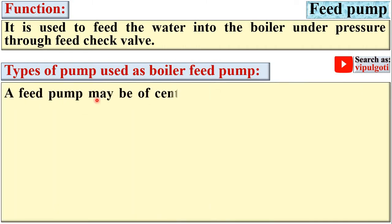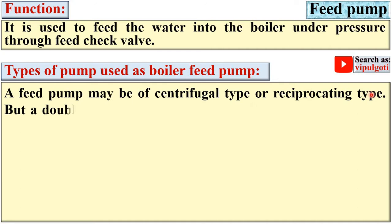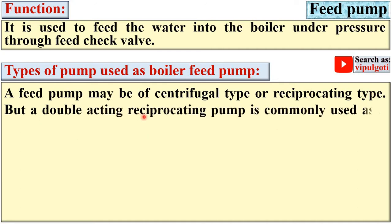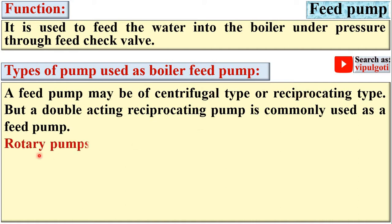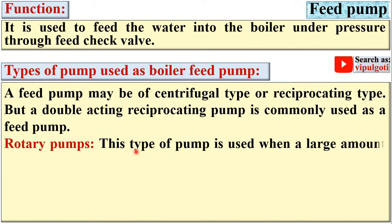A feed pump may be of centrifugal type or reciprocating type, but a double-acting reciprocating pump is commonly used as a feed pump. Basically there are two types: rotary pump and reciprocating pump.